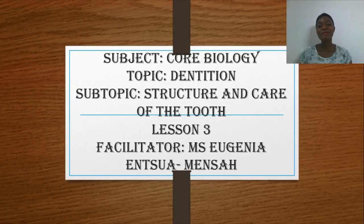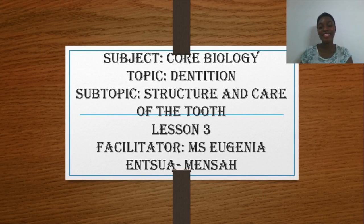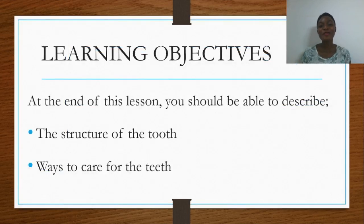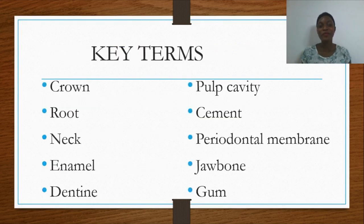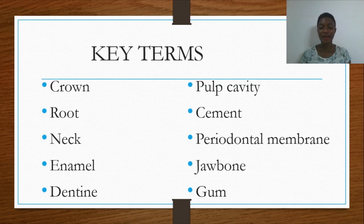Hello class, welcome to Lesson 3 of the Dentition in Mammals. For today we are looking at the structure and care of the tooth. I'm Miss Eugenia Tiaminsa. At the end of this lesson you should be able to describe the structure of the tooth and ways to care for it. Our key themes are: crown, roots, neck, enamel, dentine, pulp cavity, cement, periodontal membrane, jawbone, and gum.